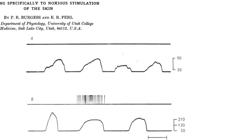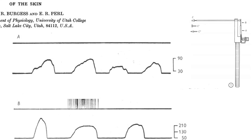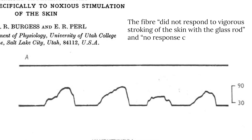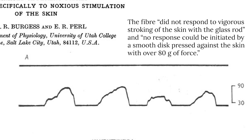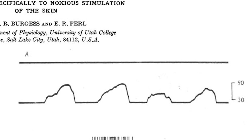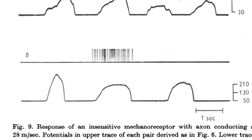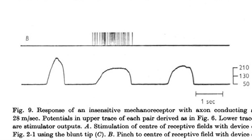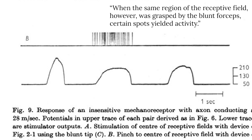In panel A, they're probing the skin with just a blunt probe — like the eraser end of a pencil touching your hand. You can see that this particular neuron they're recording from doesn't respond. So this neuron does not respond to low threshold stimulation. In panel B, they're pinching the skin with a serrated forceps, which is painful. If you did this to the person sitting next to you, they wouldn't be happy. And here you can see that if they pinch the skin, this neuron responds — it only responds to a high threshold stimulus.